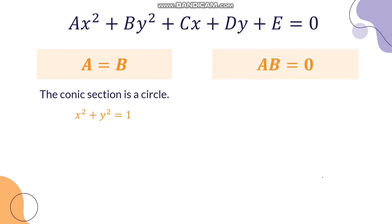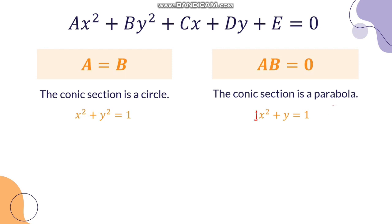If A times B is equal to 0, then the conic section is a parabola. For example, X squared plus Y equals 1. In this equation, A is the coefficient of X squared, so A is 1. For B, that is the coefficient of Y squared, but there is no Y squared in this equation, meaning B equals 0. So if we multiply A and B, the answer is 0, which means this equation represents a parabola.